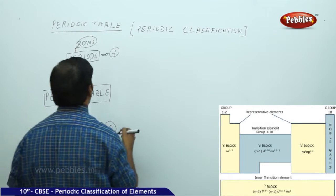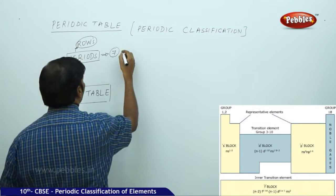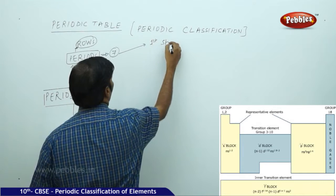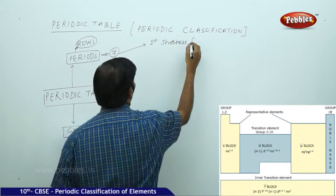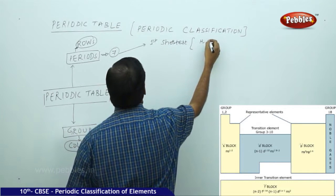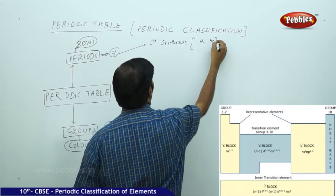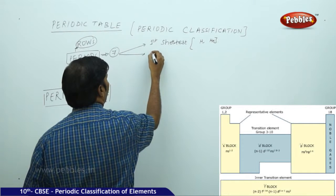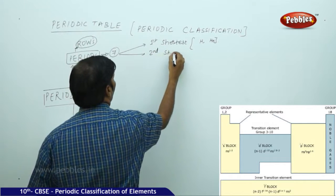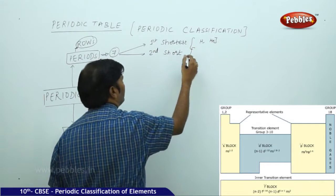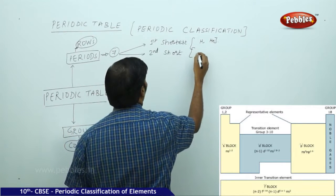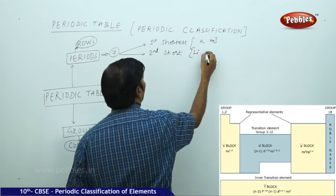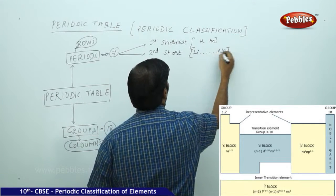In these 7 periods, the first one is the shortest, with only two elements: hydrogen and helium. The second is a short period, which has 8 elements, starting with lithium and ending with neon.